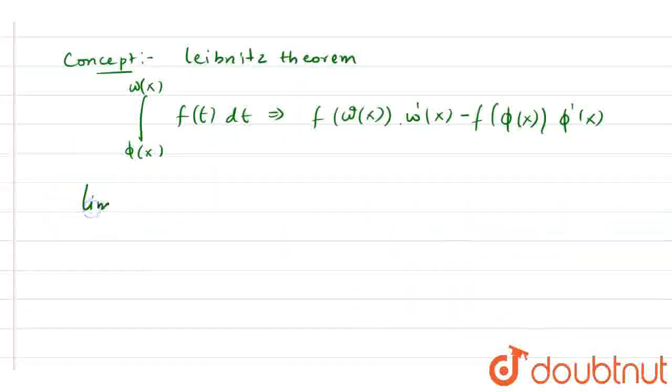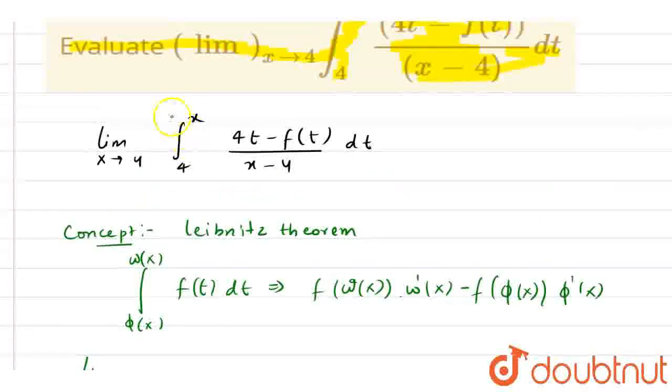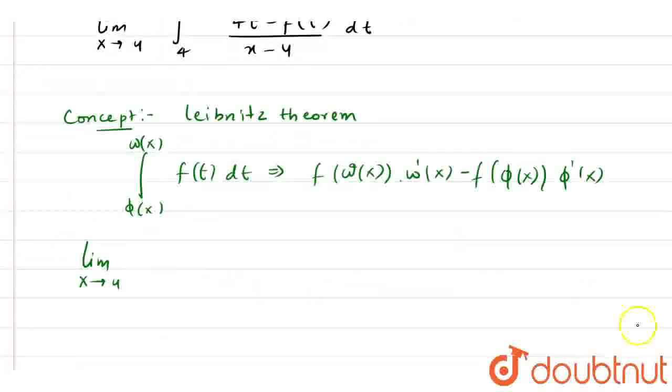We have limit x tends to 4, and now I am going to apply Leibniz theorem. I am going to put x in place of t. So we have 4x minus f(x) multiplied by the derivative of x, which is 1, minus